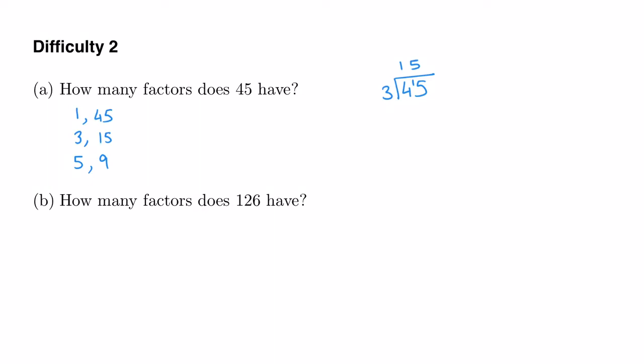So the answer to this question is 6. I've got 6 factors listed for the number 45. Now, how many factors does 126 have? I'm going to do the same thing. I'll start with 1 and 126. That's a factor pair.